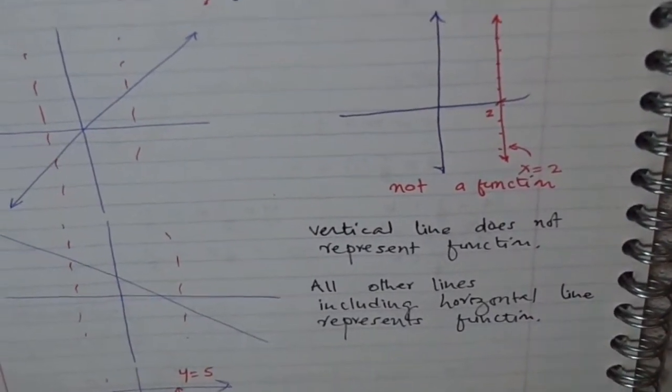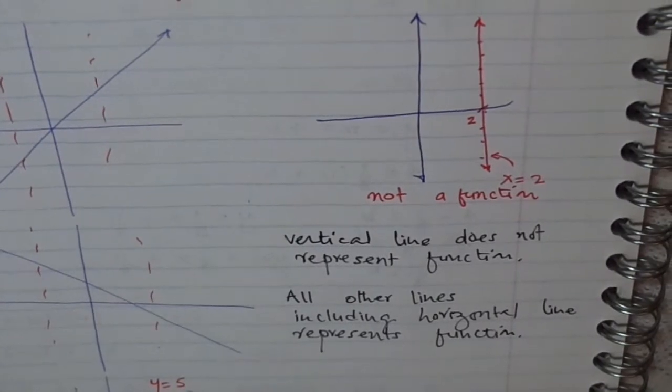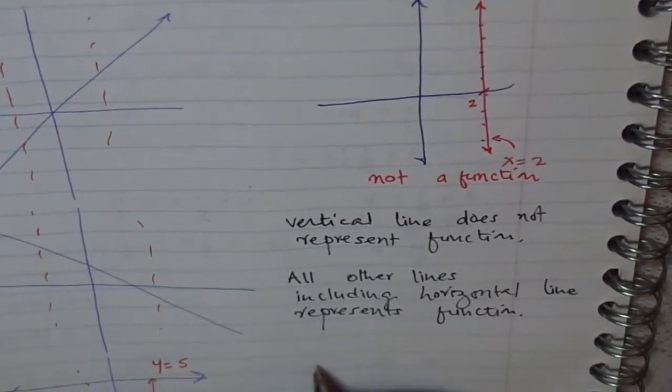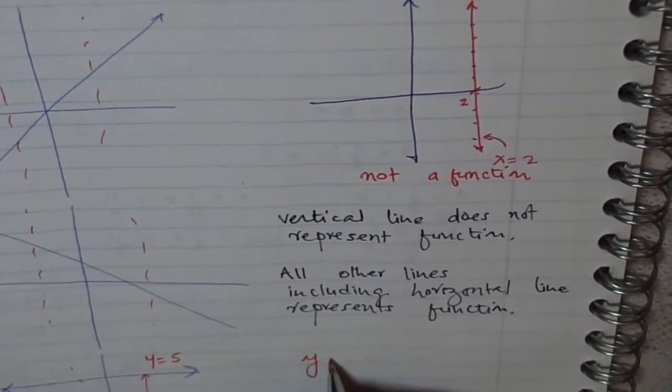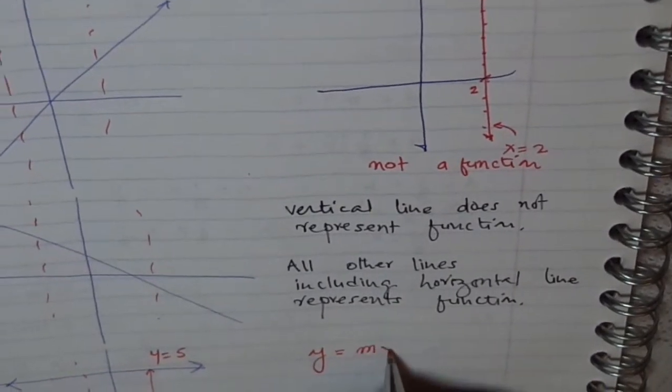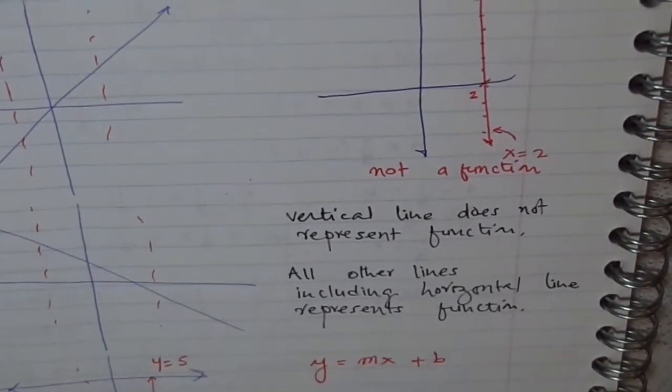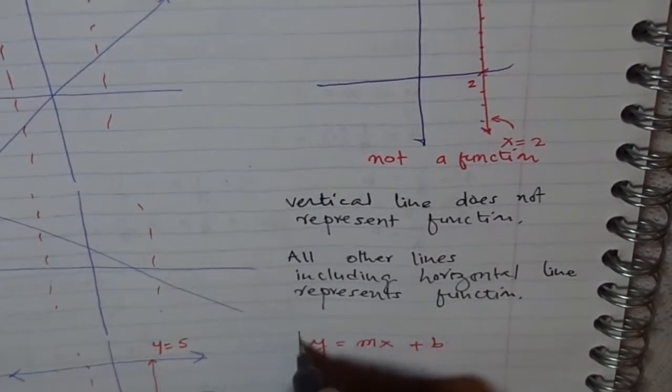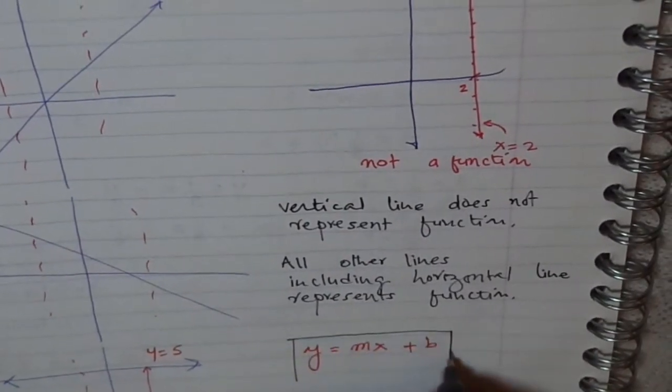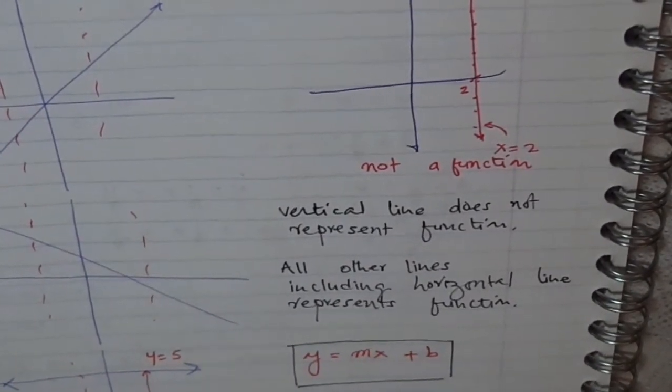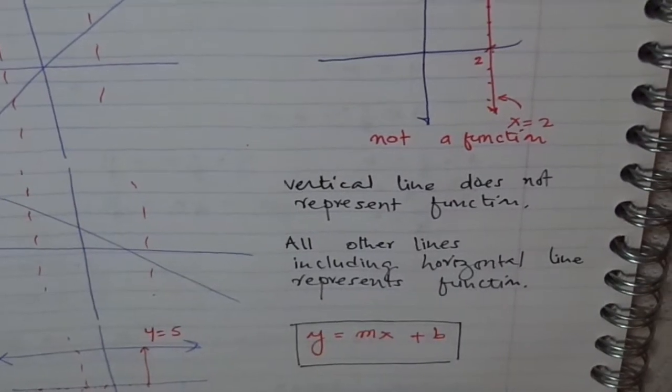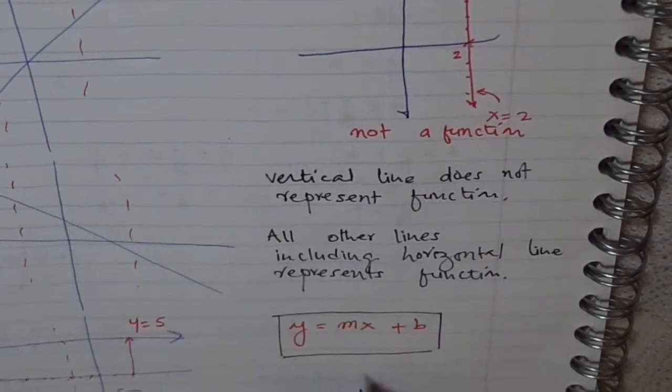Now think about this. One more problem for you. The equation y equals mx plus p represents a line. Correct? y equals mx plus p represents a line. So now the question is,